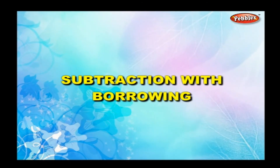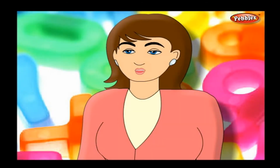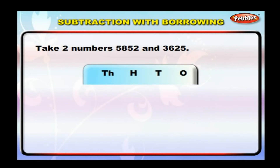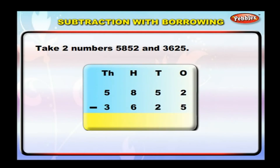Subtraction with borrowing. In the given two numbers, when the digit to be subtracted is bigger than the corresponding digit, we borrow one from the previous digit in the first number. I will explain this in an example. Take two numbers: five thousand eight hundred and fifty-two and three thousand six hundred and twenty-five. Arrange them in a column.